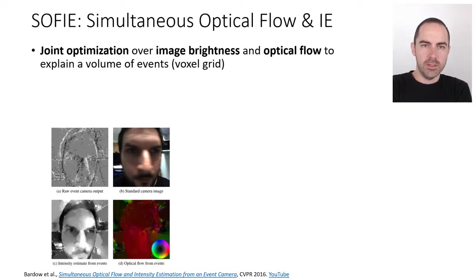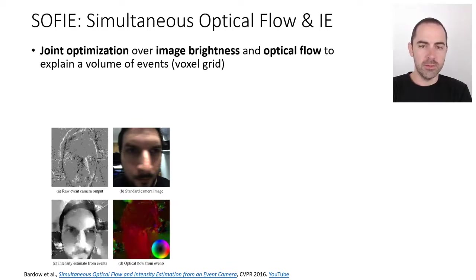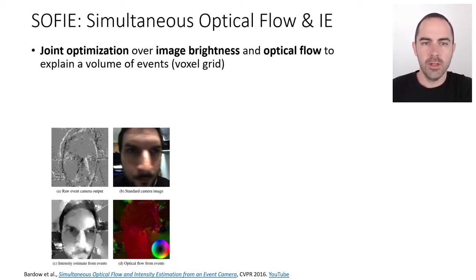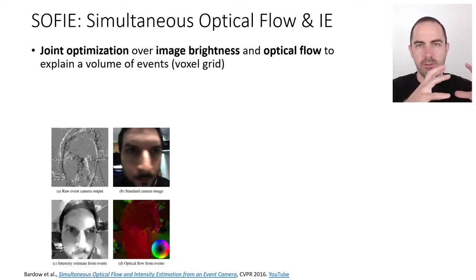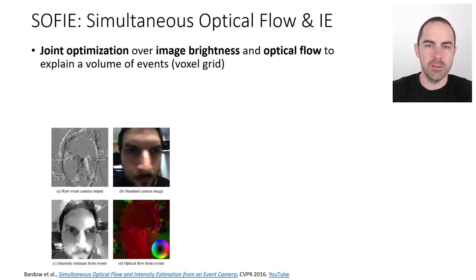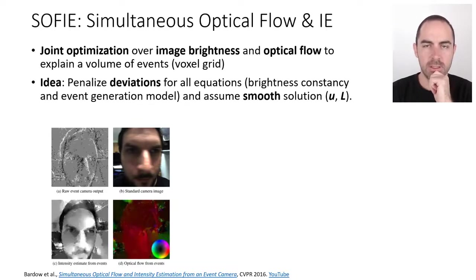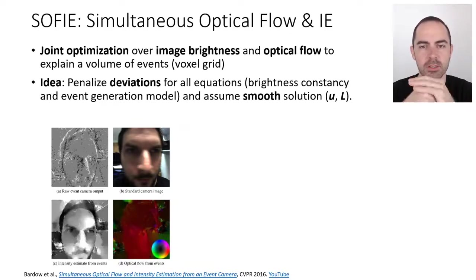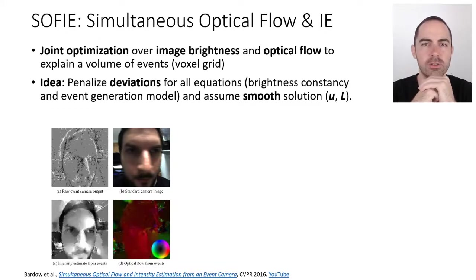Moving to 2016, there is a paper on simultaneous optical flow and image intensity reconstruction — we saw this before in image reconstruction, now we look at it from the optical flow perspective. The paper processes a volume of events and simultaneously estimates the flow and brightness that best explain that volume. Events are represented internally using a voxel grid. The idea is to take the equations relating optical flow, brightness, and events, and penalize deviations from those equations.